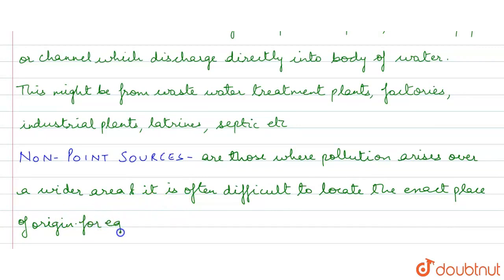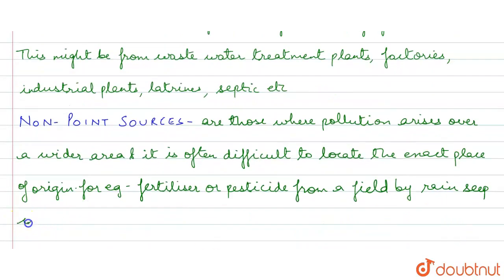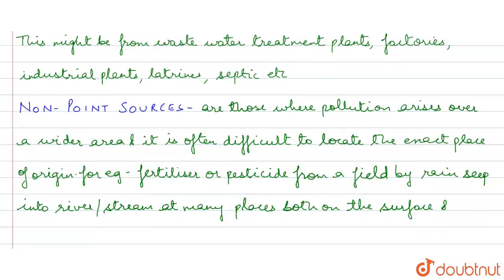For example, fertilizer or pesticide from a field by rain may seep into rivers and streams at many places. We will not know the exact location from which field - both on the surface and through the soil.